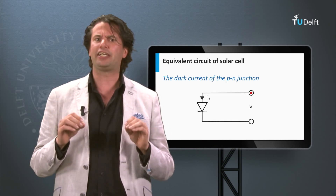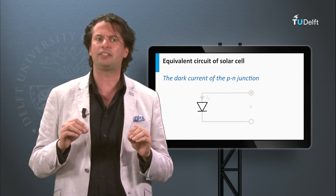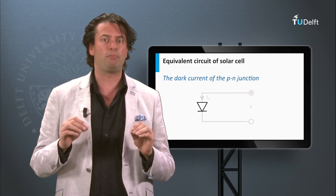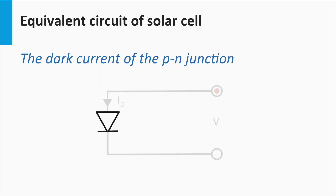A P-N junction is represented by the electrical symbol shown here. It is a triangle with a line on top of its vertex. The triangle points in the direction in which the diode allows an electrical current to flow under a forward bias condition. In the opposite direction, the diode blocks the current.